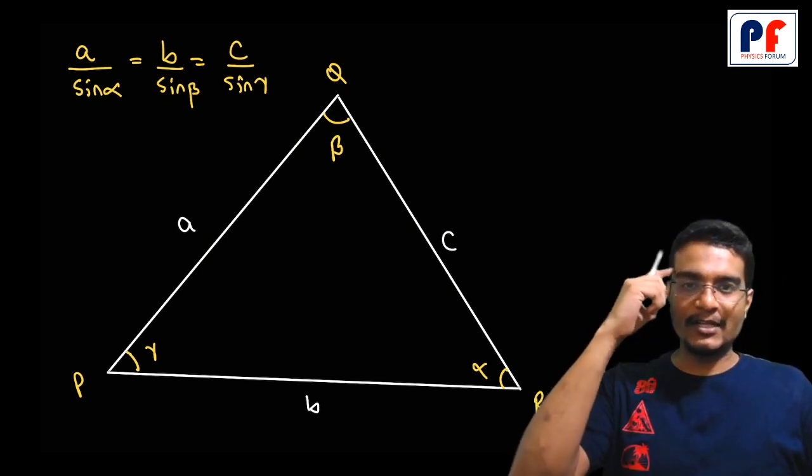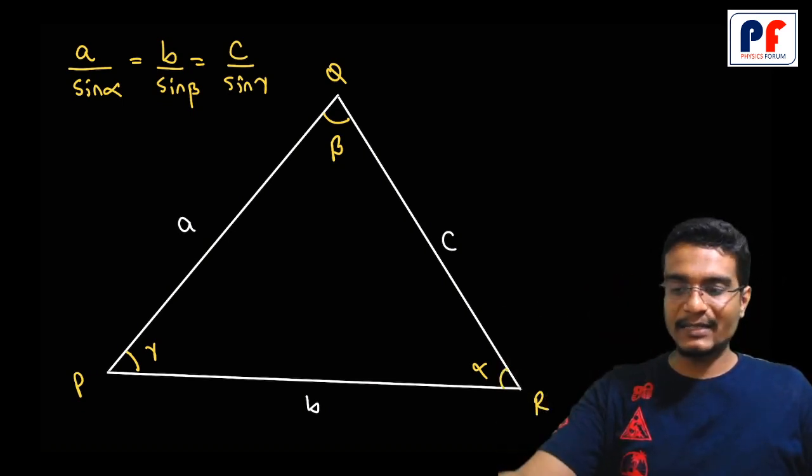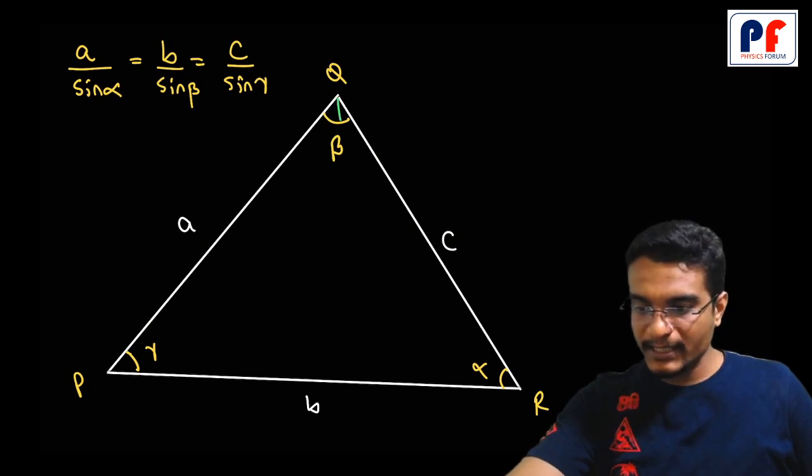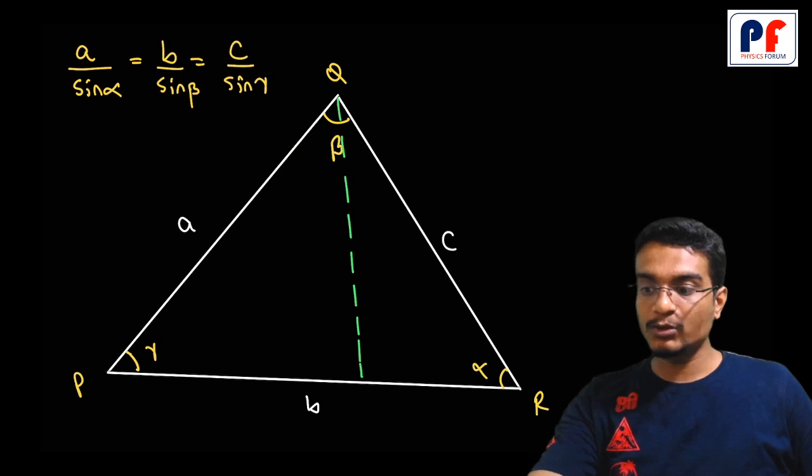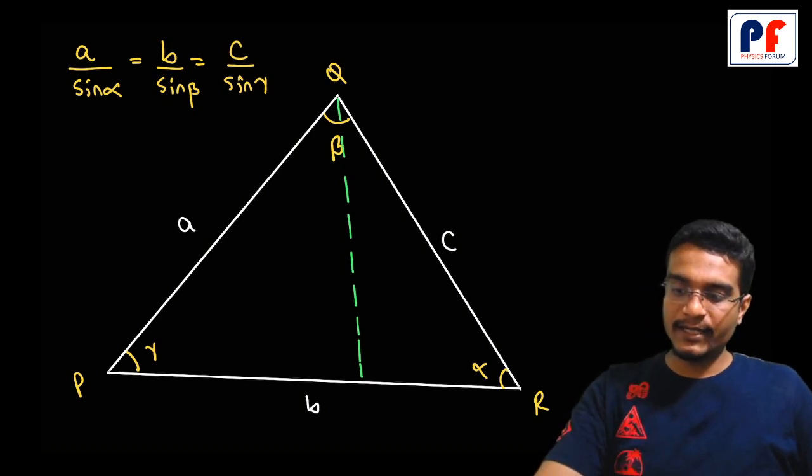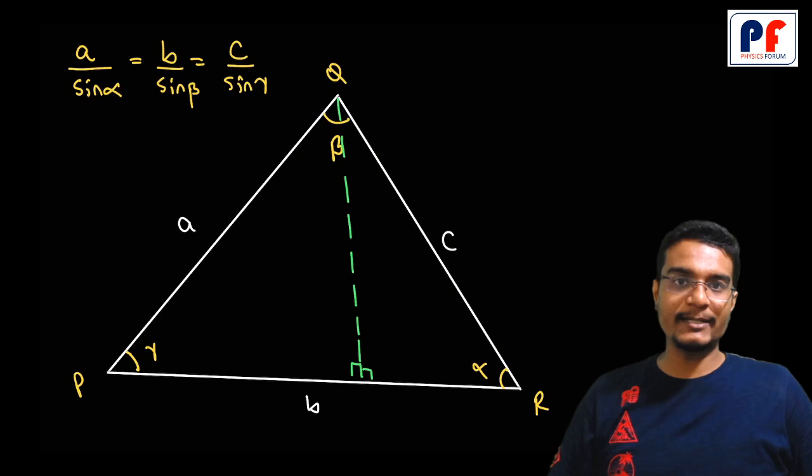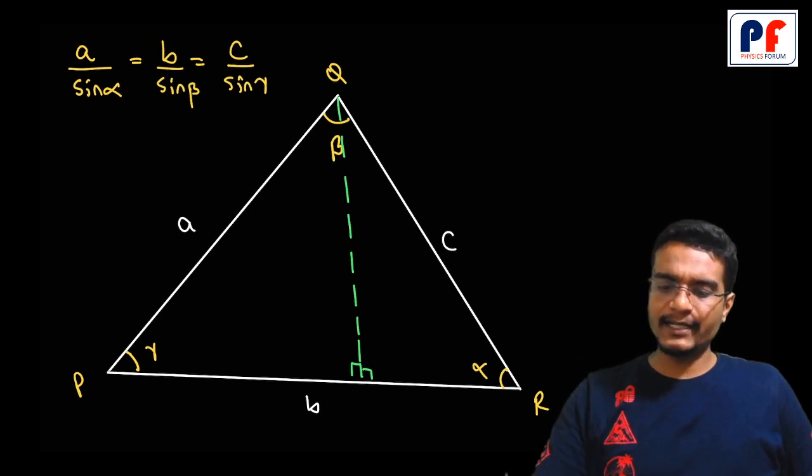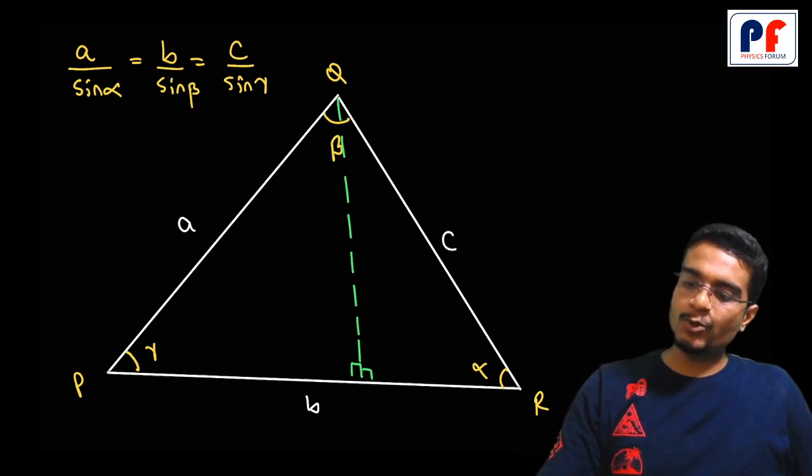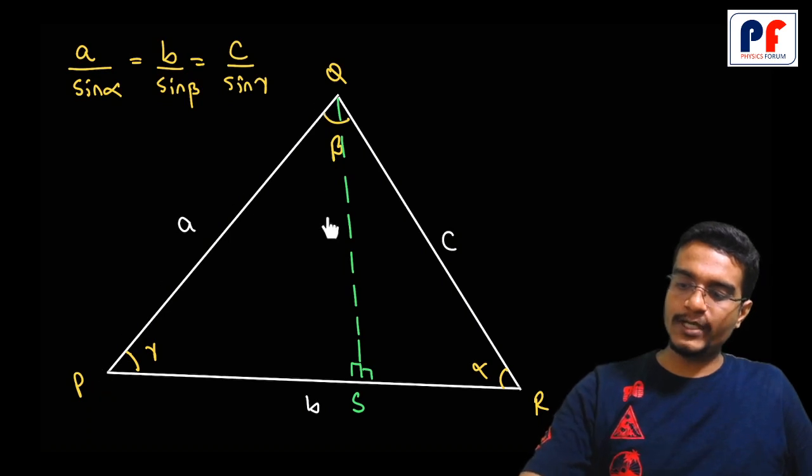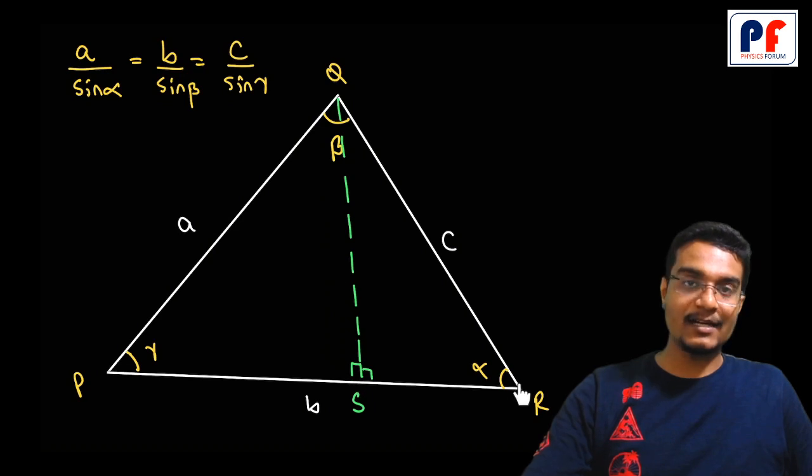Draw a perpendicular from vertex Q to the side PR. This creates two right angle triangles: triangle PQS and the other triangle QSR.